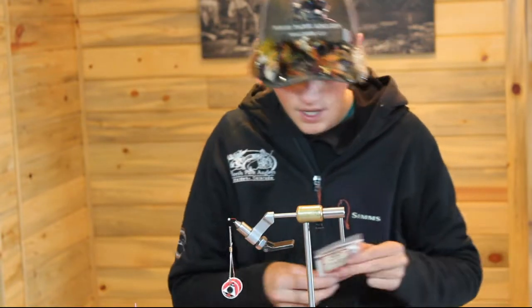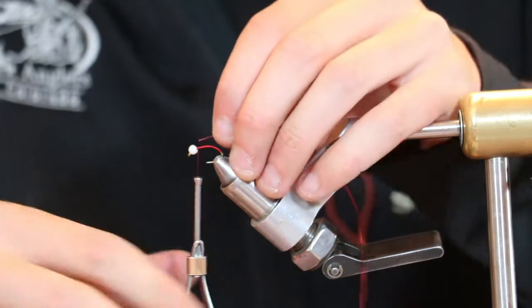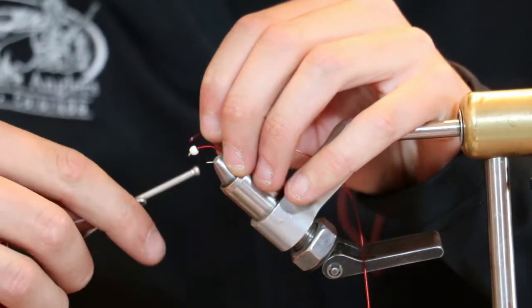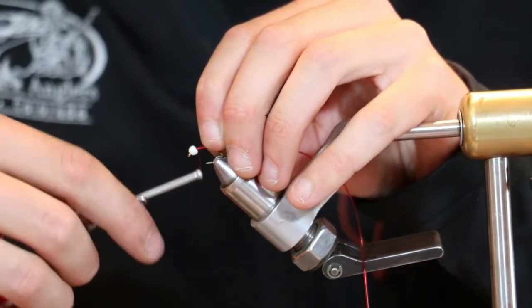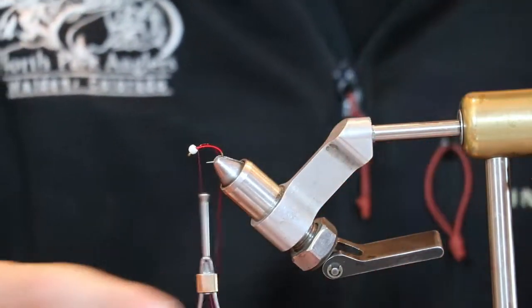So the next thing we'll tie in is some micro stretch tubing, in this case red. I like to tuck it up into the bead there. Get it tied down just a little bit.